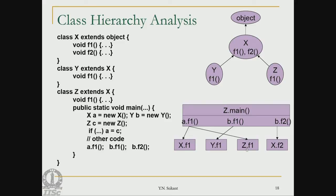So b dot f1 can be directly coded as y dot f1 and b dot f2 as x dot f2 — these become static calls. But a dot f1 cannot be resolved at compile time; code must check the type of a at run time and call x dot f1 or z dot f1 accordingly. This run time resolution is necessary in certain cases, and whenever we can resolve to a static call we should do so.